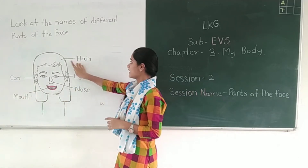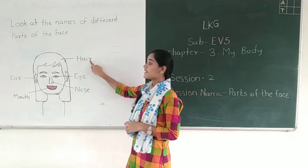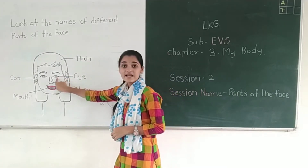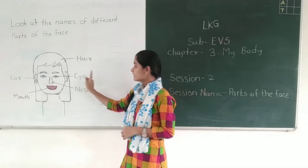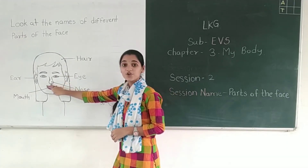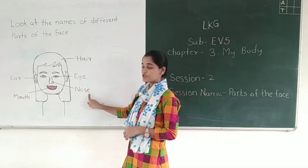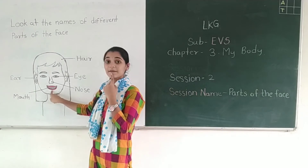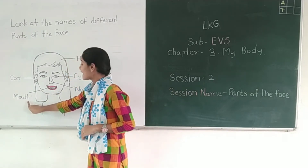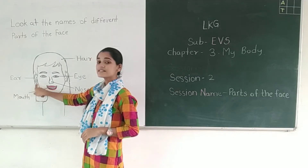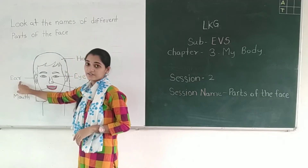So let us do this. This is hair — H-A-I-R. This is eye — E-Y-E. This is nose — N-O-S-E. This is mouth — M-O-U-T-H. And this is ear — E-A-R.